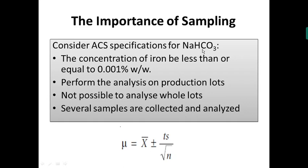Suppose you analyzed the sodium bicarbonate sample for iron and performed five measurements. You take the mean of all five measurements as x̄. Here s is the standard deviation of all five measurements, calculated as: s = √[Σ(xᵢ − x̄)² / (n−1)]. And n indicates the number of samples collected.